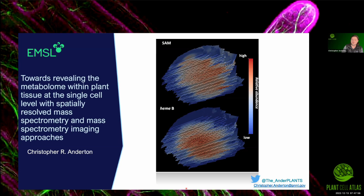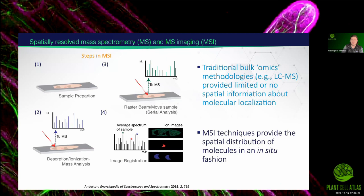I'm Chris Anderton, and I'm at the Environmental Molecular Science Laboratory, which is on the campus of Pacific Northwest National Lab in Washington State. The major technique I'm going to talk about focuses on spatially resolved mass spectrometry. Some of us probably know bulk mass spectrometry if you're doing metabolomics or lipidomics, where you basically extract out your sample and may do some modifications to measure different types of molecules.